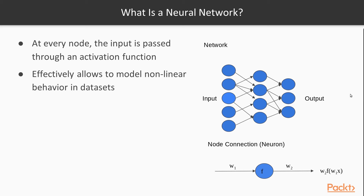One important thing that happens in the neural network is something called an activation function. In each node, when we get an input — say a value of two with a weight of three giving six — it then goes through a non-linear function, or activation function. This allows us to model non-linear behavior in the dataset, because without it we're just doing lots of linear algebra and matrix-vector multiplication, giving a purely linear network. Adding non-linearities helps the network learn a more accurate representation.